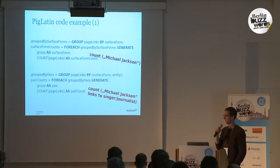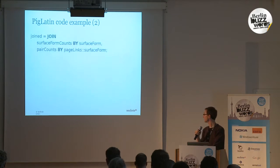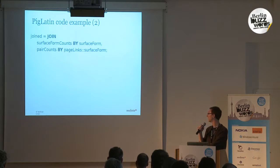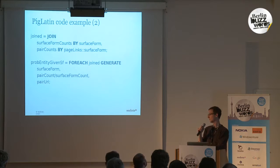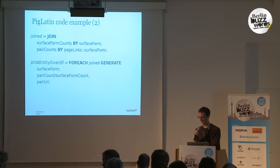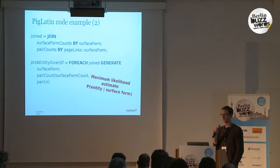And then we already have everything we need to estimate our probability distribution. All we have to do is join the two datasets we just created — we have to do that explicitly in Pig — and then divide the counts of the pairs by the total surface form counts. What we end up with is a maximum likelihood estimate of this probability distribution.